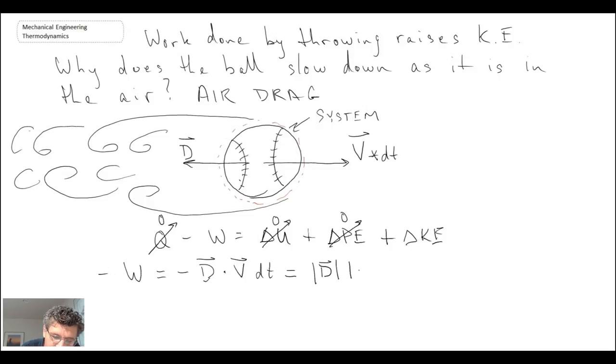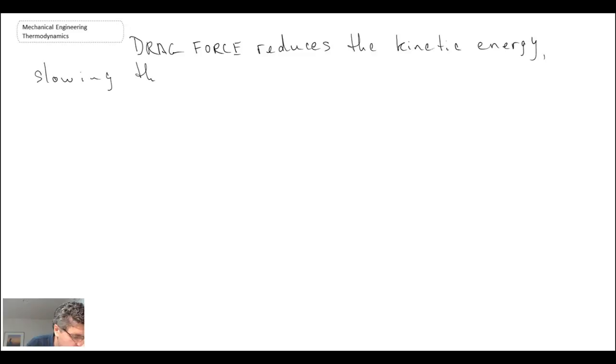We can represent the dot product in terms of scalars or the magnitude of these two vectors. There would also be a sine in there, but it would be sine of 180 degrees, which becomes minus one, which cancels out the minus sign, multiplied by dt. This is equal to the change in kinetic energy, which we can express as kinetic energy at T minus kinetic energy at a later time T plus dt. So the drag force is what is slowing down our baseball.